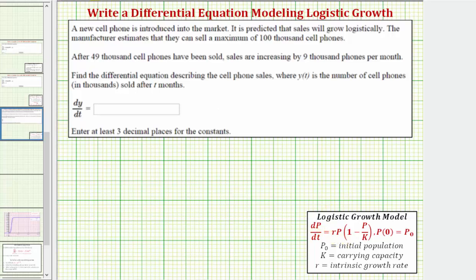Our differential equation will be in the form dy dt equals r times y times the quantity one minus y divided by k.